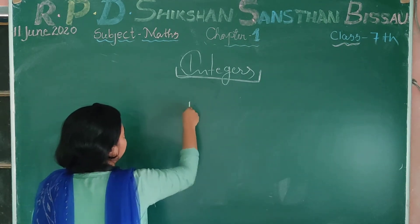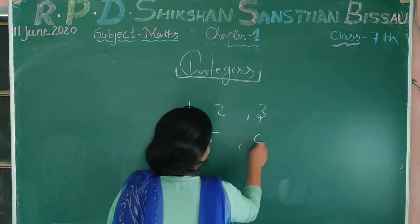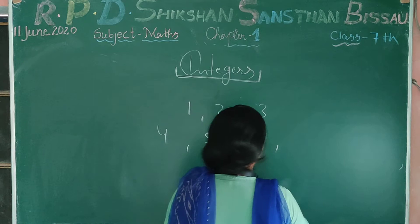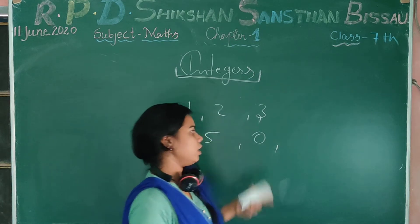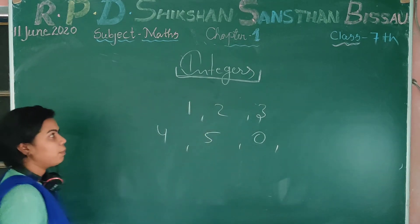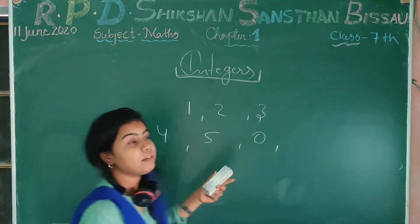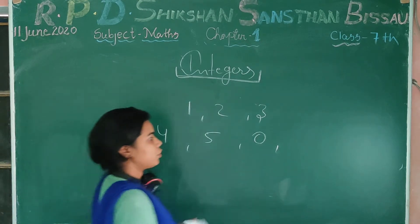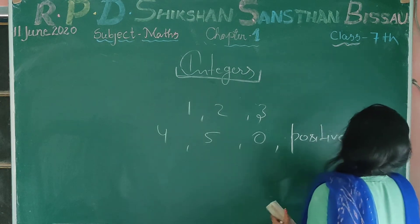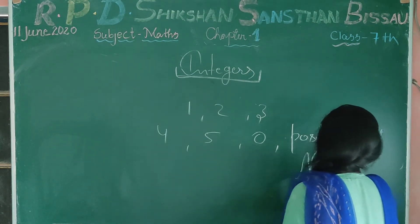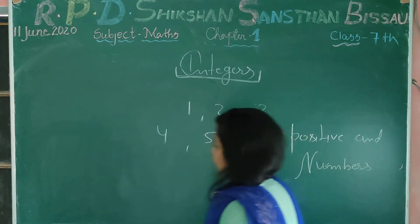Natural numbers are like 1, 2, 3, 4, 5, 0. Natural numbers will start from 1 to infinity. All numbers 0 to infinity. But integers include both 0 to infinity and negative numbers — you can say positive and negative numbers. Positive and negative integers.